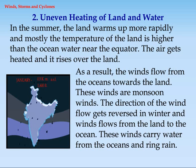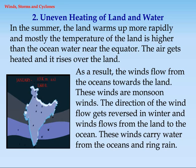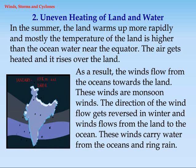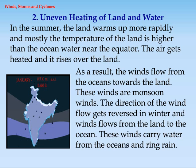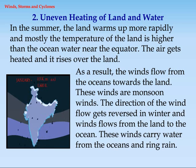Second, uneven heating of land and water. In the summer, the land warms up more rapidly and mostly the temperature of the land is higher than the ocean water near the equator. The air gets heated and it rises over the land. As a result, the winds flow from the oceans towards the land. These winds are monsoon winds. The direction of the wind flow gets reversed in winter and winds flow from the land to the ocean. These winds carry water from the oceans and bring rain.